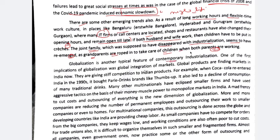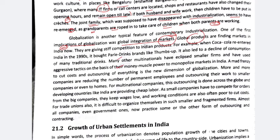Globalization is also a feature of contemporary industrialization. One of its first implications is global integration of markets — you can get global products in India and trade with the US. More and more companies are reducing the number of permanent employees, outsourcing work to small companies. Small companies competing for orders from big companies keep wages low and working conditions poor to cut costs. It is difficult for trade unions to organize themselves in such smaller and fragmented firms. Almost all companies and government entities now practice some form of outsourcing and contracting.